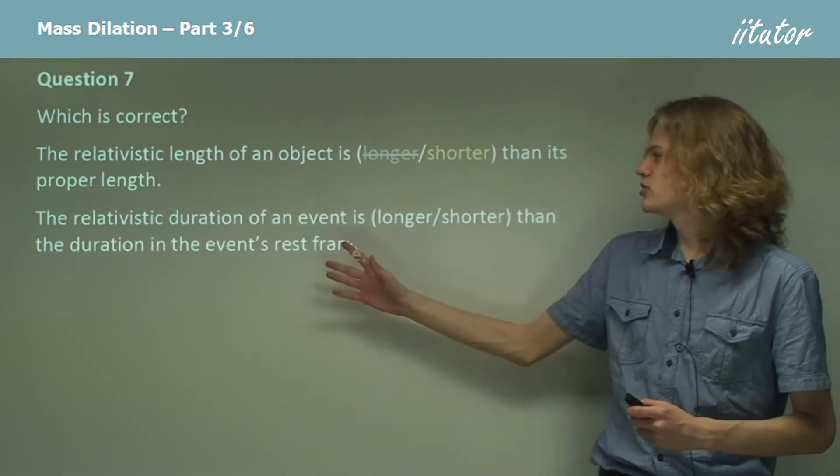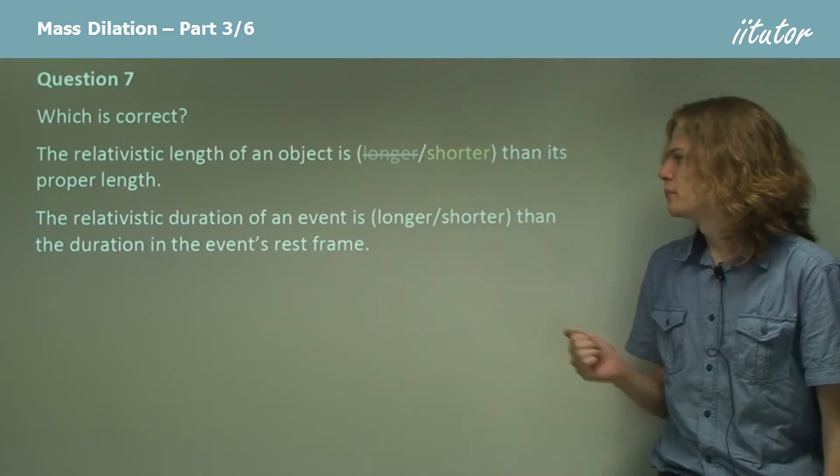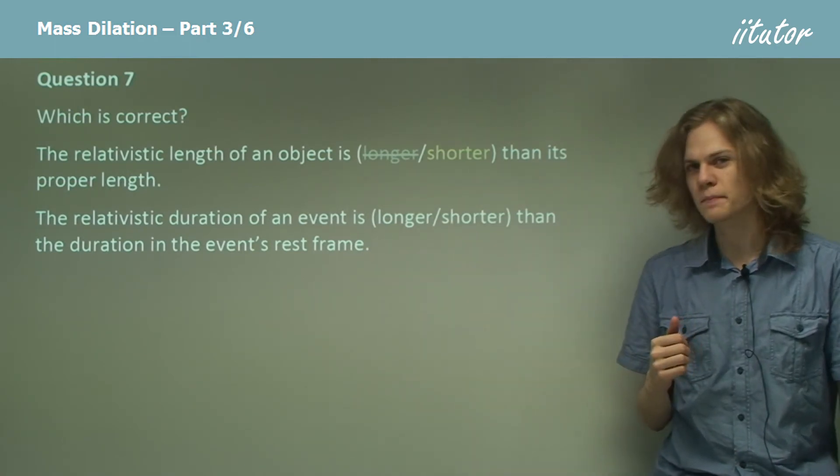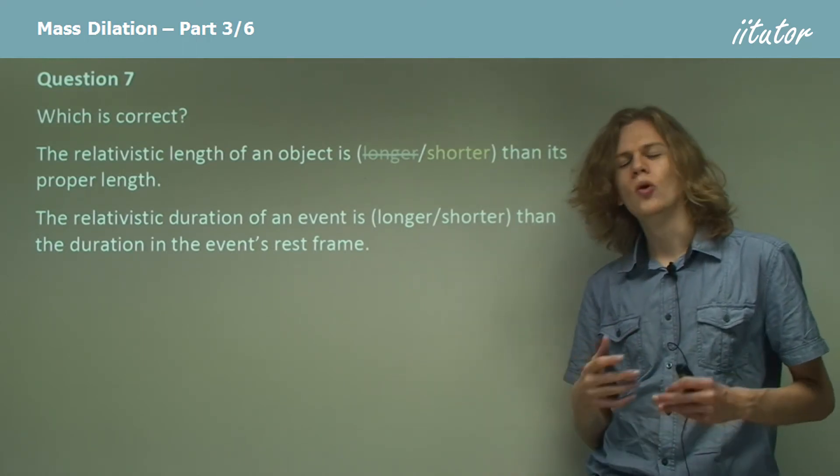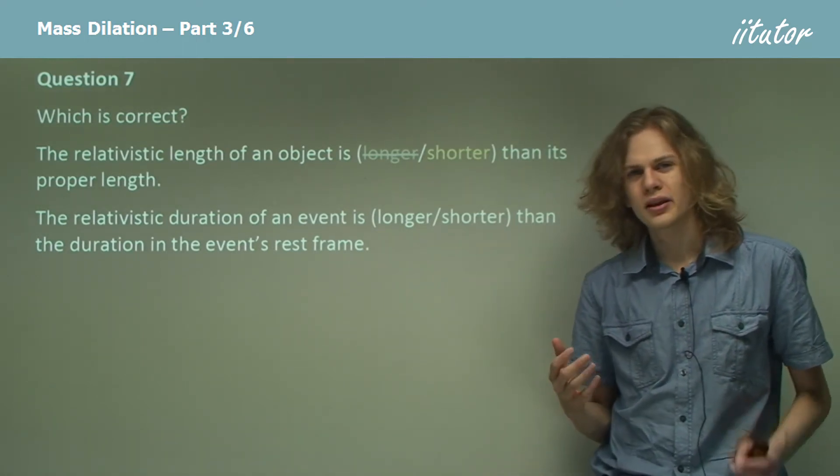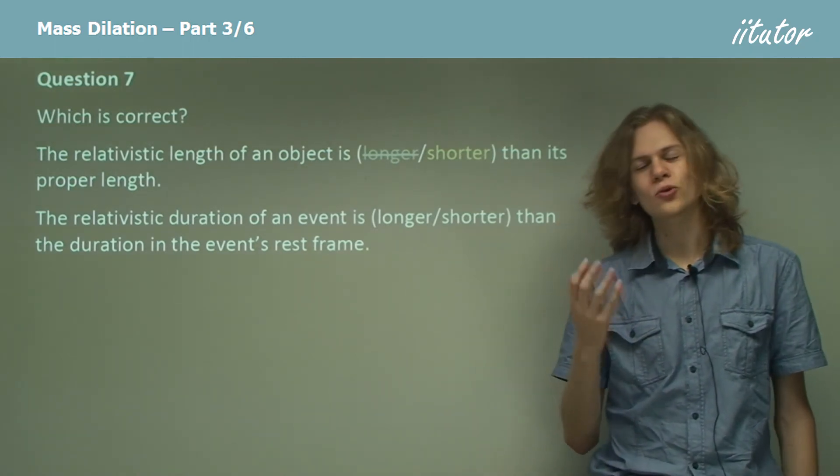Now the relativistic duration of an event is longer or shorter than the duration in the event's rest frame. So this has to do with duration or time. Now is it time dilation or time contraction? It is of course time dilation.